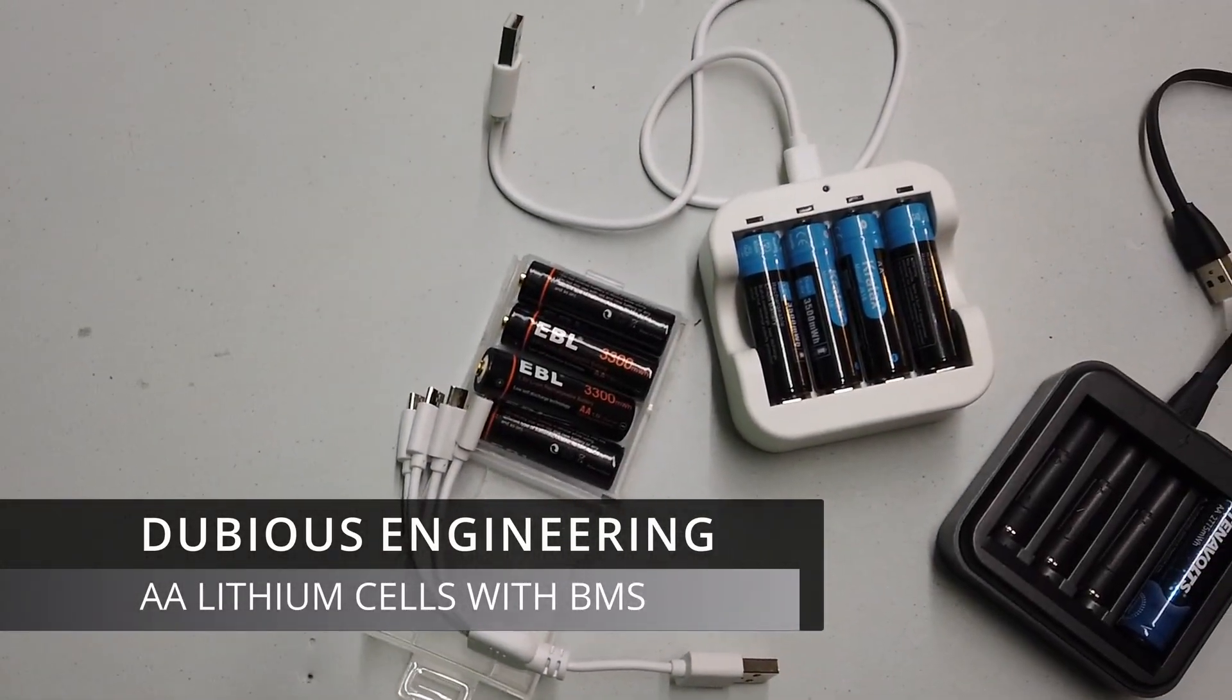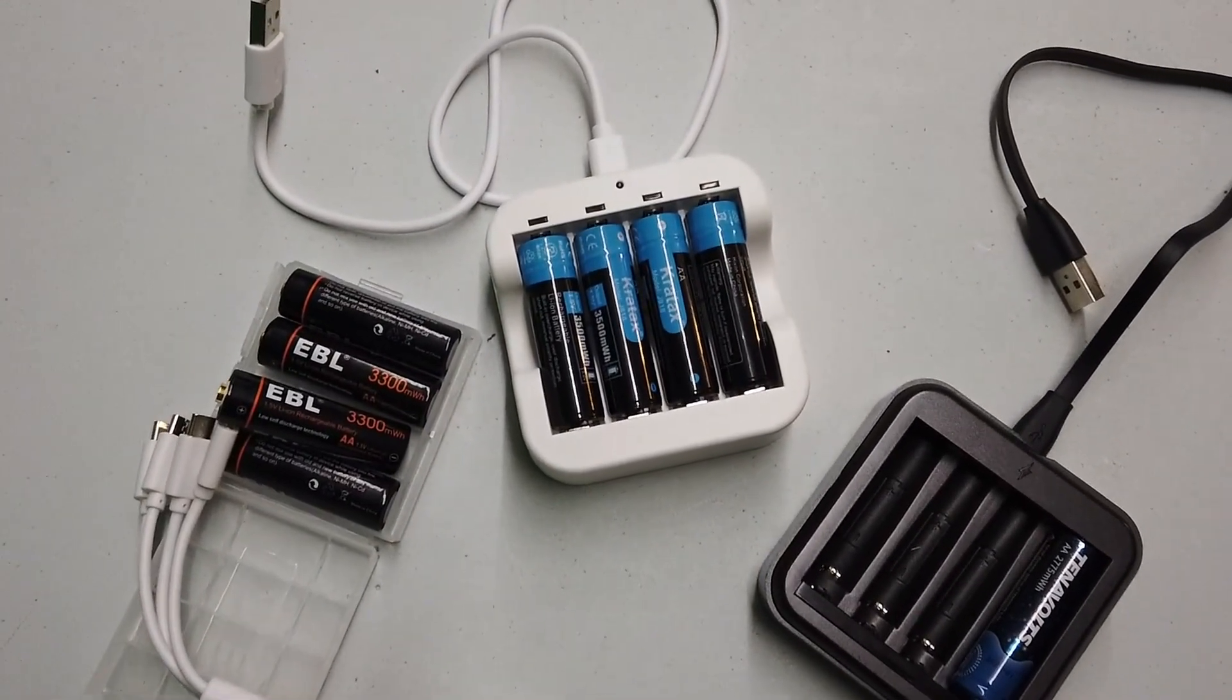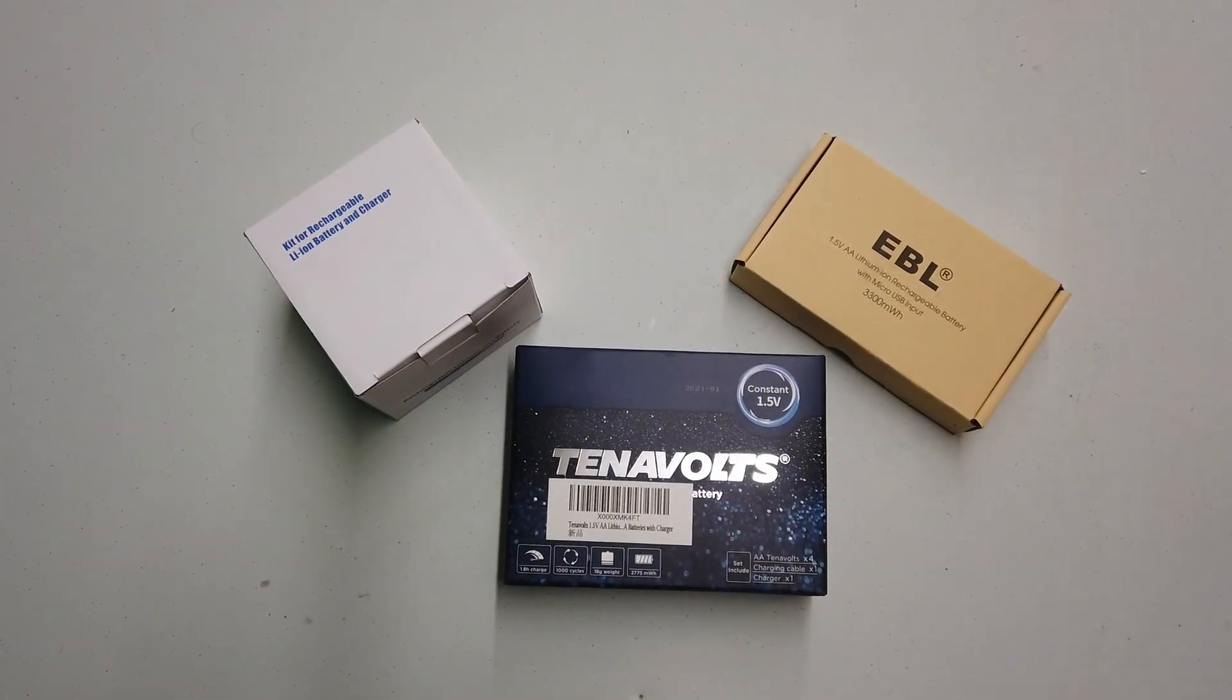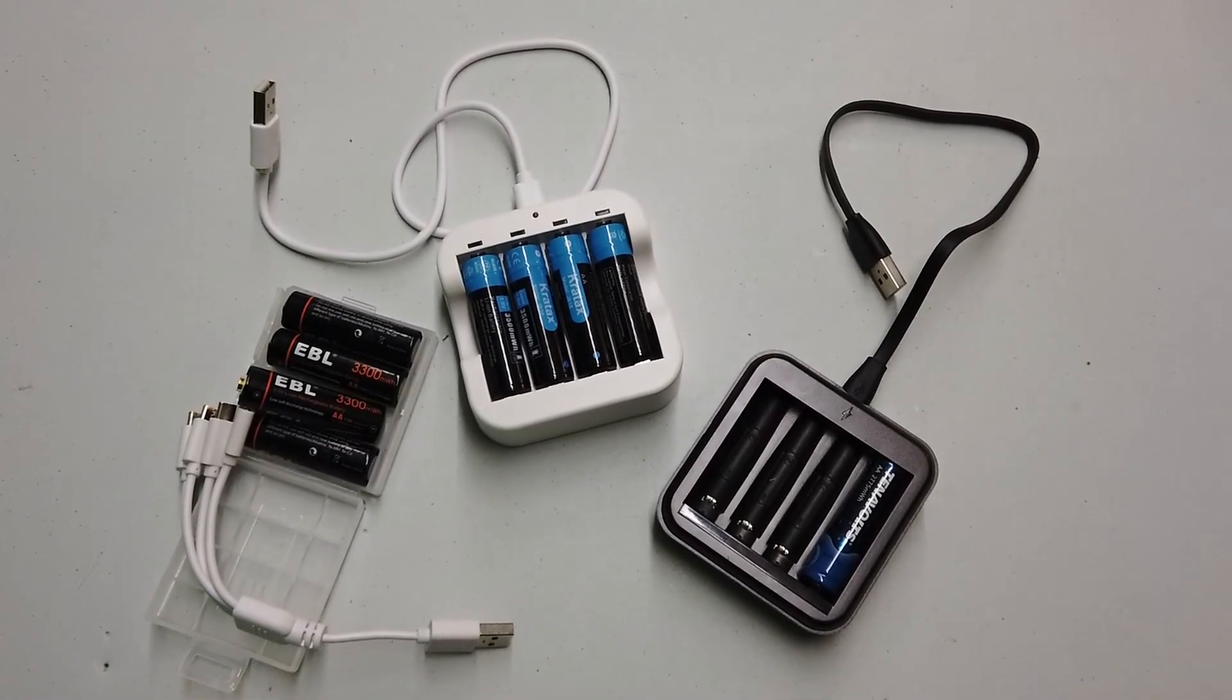Hello folks and welcome back to Dubious Engineering. Today, lithium ion in AA cells with battery management circuitry built in, in order to reduce the voltage down to 1.5 volts. Let's get some of these things apart, let's test them, and let's see how they perform.